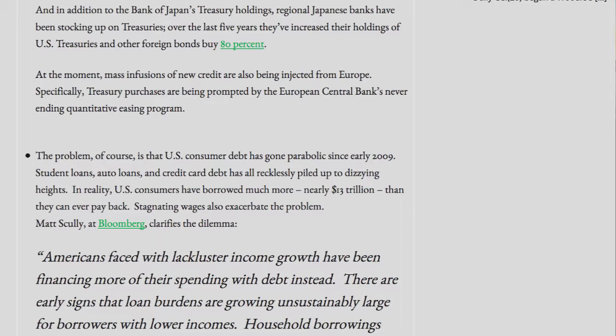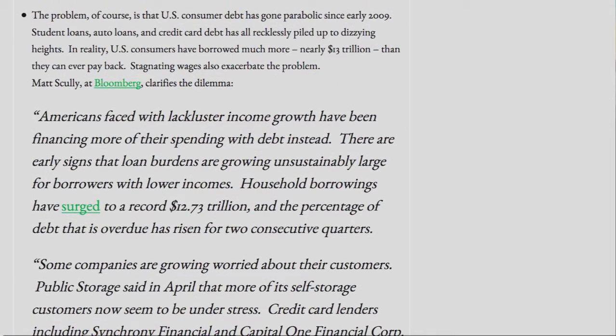In addition to the Bank of Japan's Treasury holdings, regional Japanese banks have been stocking up on Treasuries. Over the last five years, they've increased their holdings of U.S. Treasuries and other foreign bonds by 80%. At the moment, mass infusions of new credit are also being injected from Europe. Specifically, Treasury purchases are being prompted by the European Central Bank's never-ending quantitative easing program. The problem, of course, is that U.S. consumer debt has gone parabolic since early 2009. Student loans, auto loans, and credit card debt have all recklessly piled up to dizzying heights. In reality, U.S. consumers have borrowed much more — nearly $13 trillion — than they can ever pay back. Stagnating wages also exacerbate the problem.